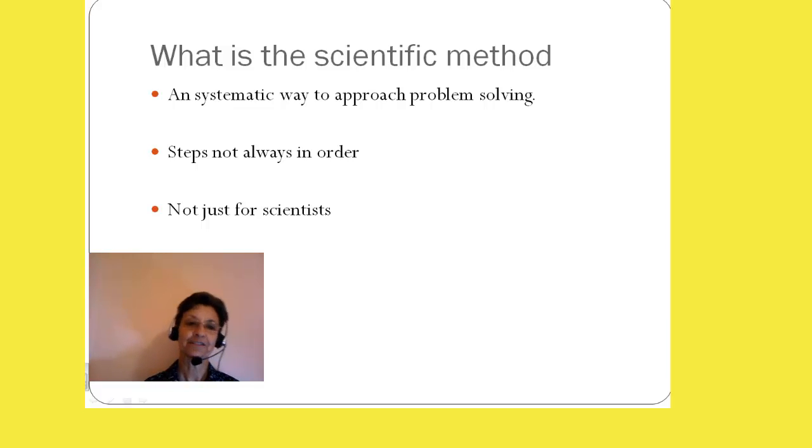What is the scientific method? Basically, it's a systematic way to approach problem solving. The steps do not have to occur in order. Sometimes scientists start in the middle, close to the end, right at the beginning. It depends. But the major thing that I want you to remember is that it is not just for scientists.